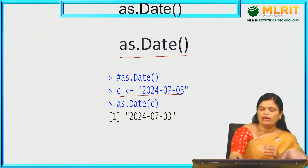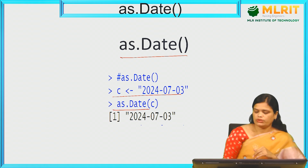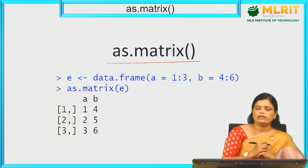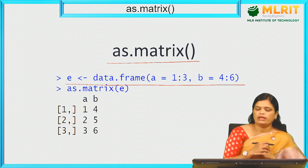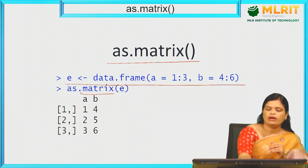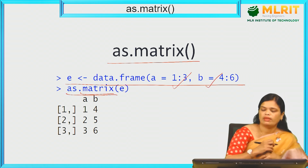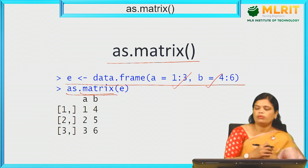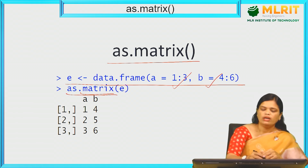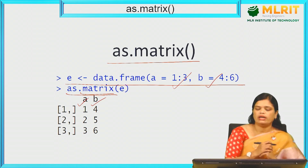as.date — here we are assigning a string to C, and that value is being converted into a date by using the as.date function. as.matrix — we have a data frame created, and using as.matrix we convert it. As we are having only A and B as columns, only those two columns will be taken by the matrix. Depending on the number of data values, it will be divided accordingly into the number of rows.